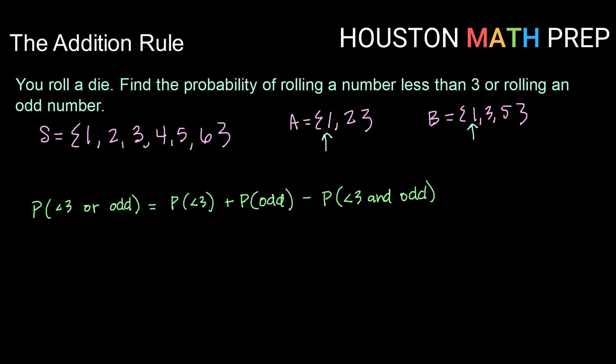Our probability of less than 3, there are 2 outcomes in that event out of 6 total outcomes in our sample space, plus probability of odd, there are 3 outcomes in that event out of 6 total outcomes, minus the probability of being less than 3 and odd, that is 1 outcome that is in both, out of 6 total outcomes. So 2 + 3 - 1 = 4 out of 6 or 2/3. Our probability of rolling a number less than 3 or rolling an odd number is 2/3.